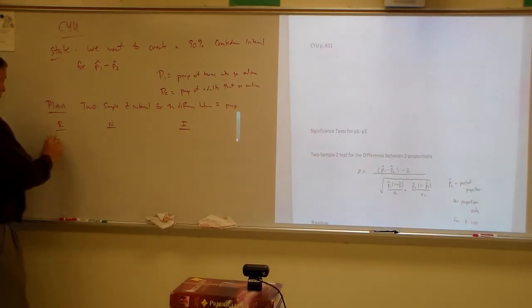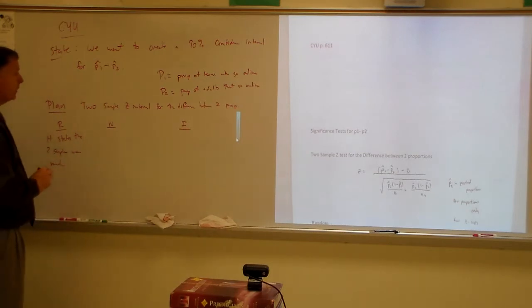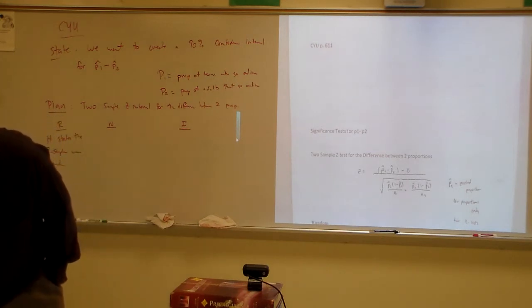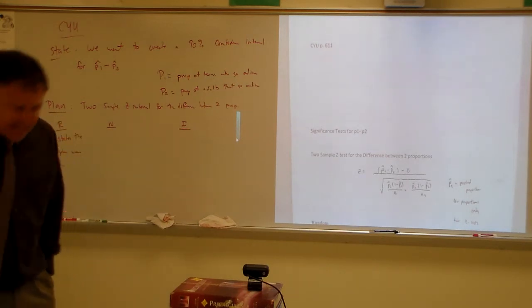So, random - it states the two samples are random. All right, so N, I think they'd say it's like 68 and 63, so 63 of teens and 68 of adults.